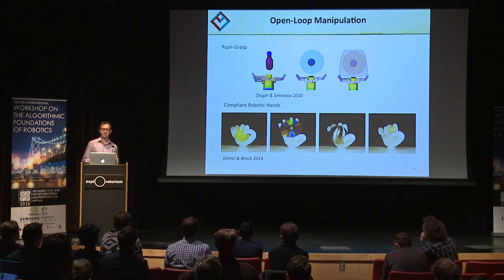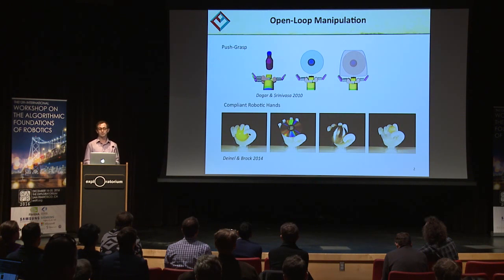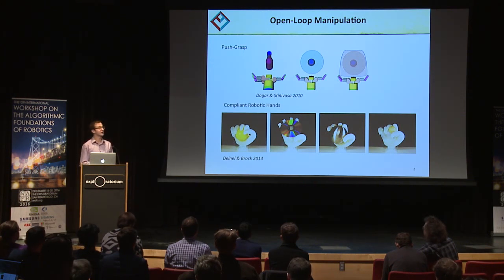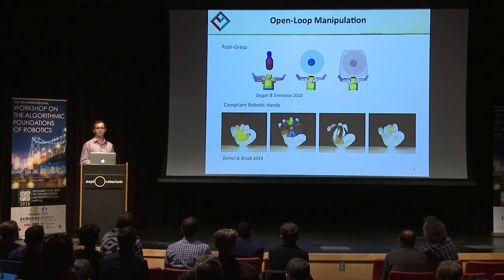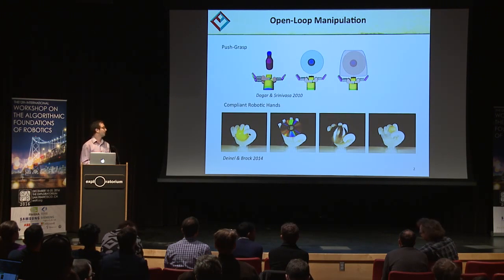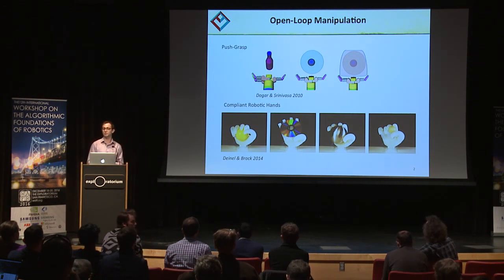Traditionally, the manipulation community has focused on open-loop, stable solutions and the planning problem. For example, you've just seen Michael present work on push-grasp actions, where you push an object using a funnel-shaped gripper until it falls in the palm, and then you can stably grasp or push it. Other approaches involve compliant hands that are naturally robust to a wide variety of object poses.